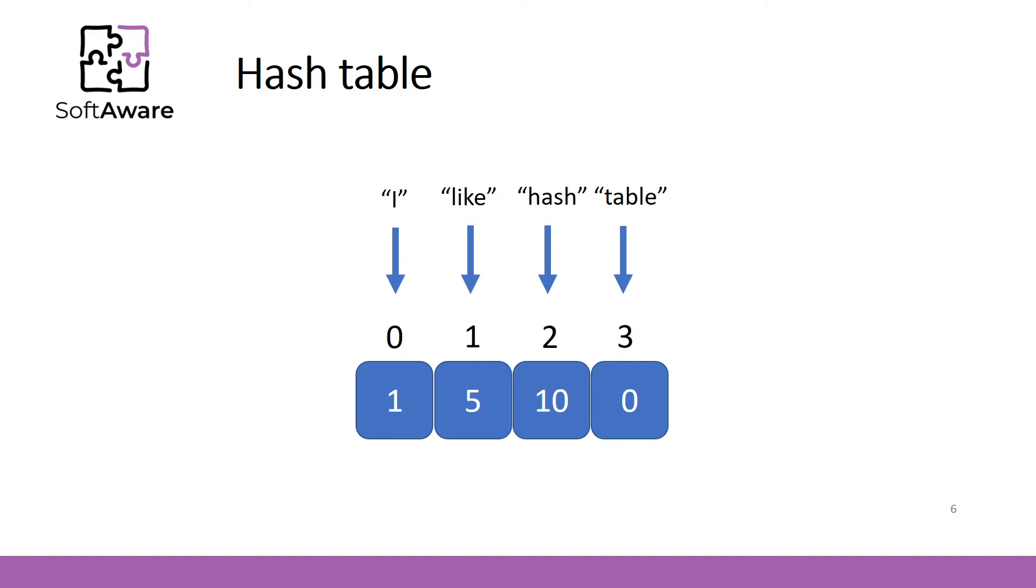Let's say we have a hash table where keys are strings. We have four strings which form a sentence: I like hash table. Let's say each string is associated with a number. For example word I is associated with 1, like is associated with 5, hash is associated with 10 and table is associated with 0.